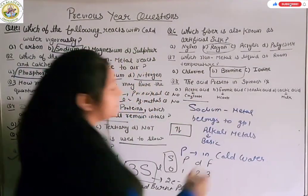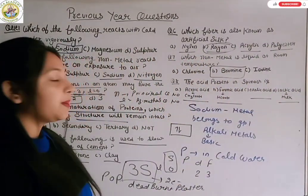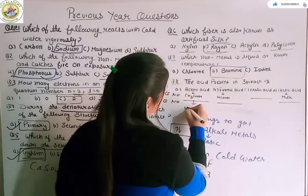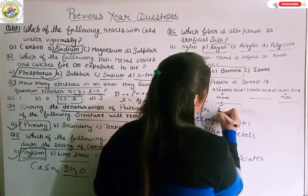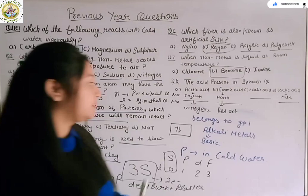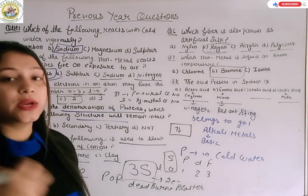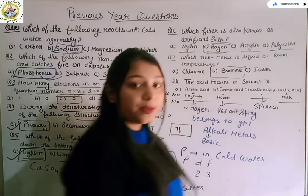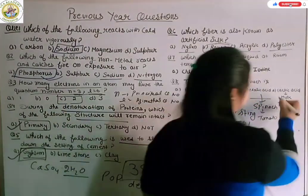Next question is the acid present in spinach. Which acid is present in spinach? First option is acetic acid, next is formic acid, next is oxalic acid, and last is lactic acid. You can tell me in the comments section. Acetic acid source is vinegar. Formic acid is present in red ants and nettle sting. Oxalic acid is present in spinach and in tomato. Lactic acid is present in milk or sour milk.